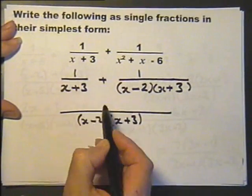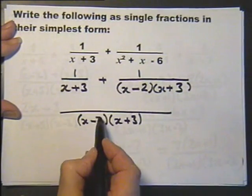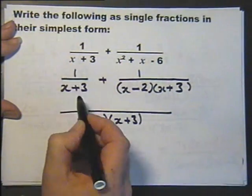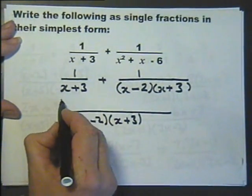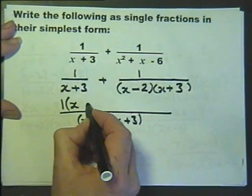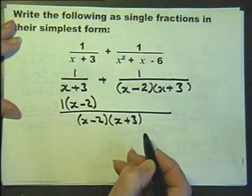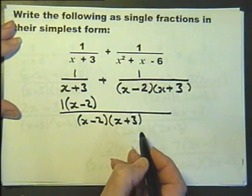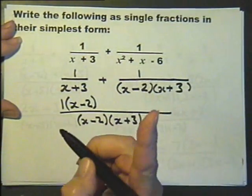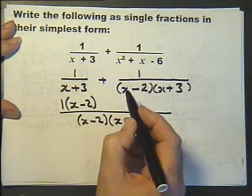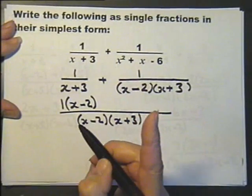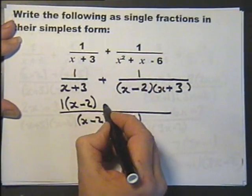Okay. Looking at that with this, the bottom has been multiplied by this, so I need to multiply the top by that. I'm going to put one outside there. It's not actually necessary with one, but it's just to show you what's happening. Now, this into this goes once. This into this goes once. So, one times one is one.